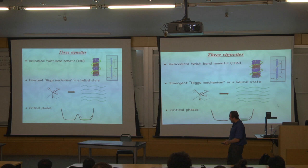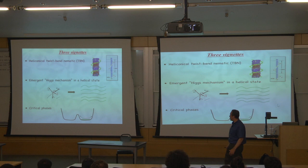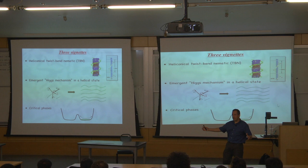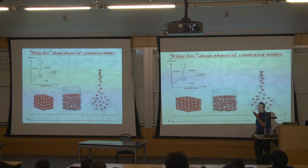Finally, I'm going to talk about critical phases. We all know about critical points, which describe points of phase transition between two phases of matter — that's when fluctuations become very important, and that's been a huge area of activity for the last 50 to 60 years. But what I'm going to describe is something much more exotic: rather than having just a critical point, you have a whole phase of matter which is critical. I'm going to argue that the twist-bend nematic is an example of such a critical phase.